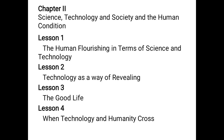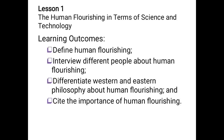Technology as a way of revealing the good life, and what will happen when technology and humanity cross. For Lesson One, our learning outcomes are: you will be able to define human flourishing, interview different people about human flourishing, differentiate the Western and Eastern philosophy about human flourishing, and cite its importance.